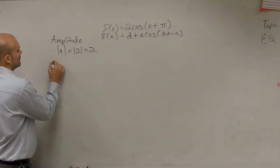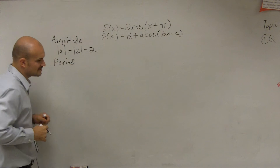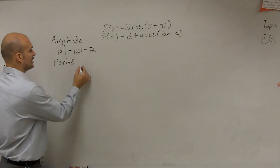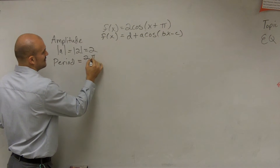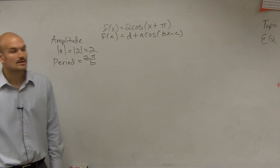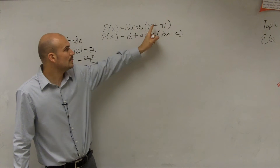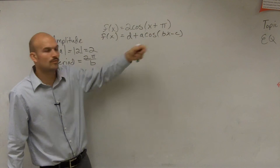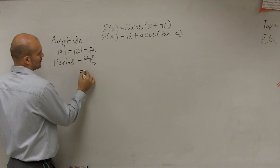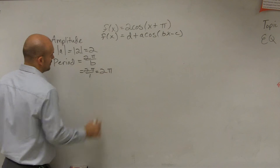Then the next thing we want to do is find the period. The period is going to tell us how long it takes for our graph to complete one cycle. To find the period, we take 2π divided by b. My b is the coefficient of x, which in this problem is 1. So I have 2π divided by 1, which equals 2π.